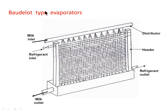Next are the Baudelot type evaporators. These consist of a series of horizontal pipes, one under another, connected to form a circuit. They can be either dry or flooded. Refrigerant flows through the tubes while chilled liquid flows in a thin film over the outside in counter-flow direction, collected in a trough at the bottom. These evaporators were generally used for cooling milk, wine, and water, since it is possible to chill to very nearly the freeze point without damaging the equipment.